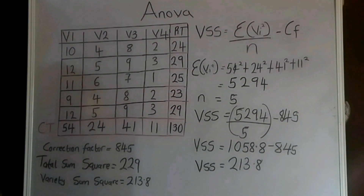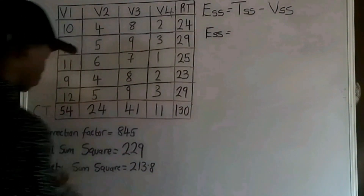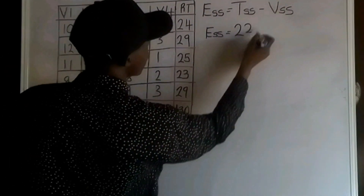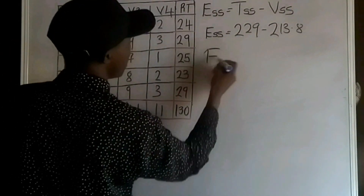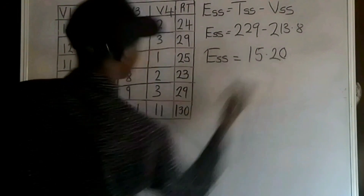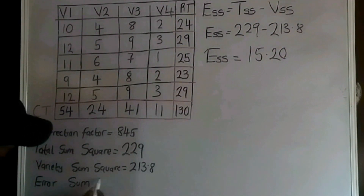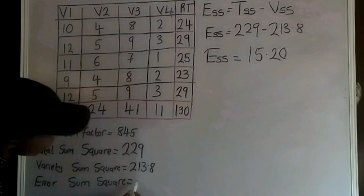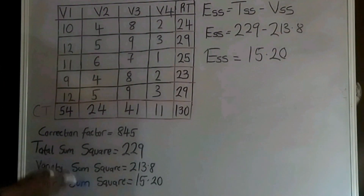After getting the variety sum of squares, the next step is to calculate the error sum of squares. The error sum of squares is the difference between the total sum of squares and the variety sum of squares: ESS = 229 − 213.8 = 15.20.